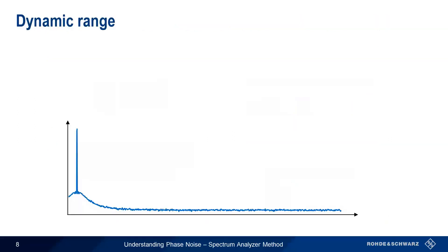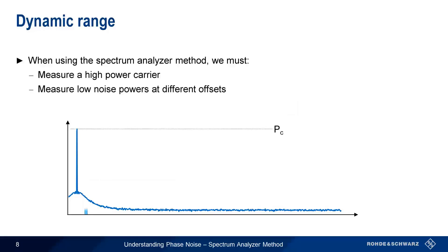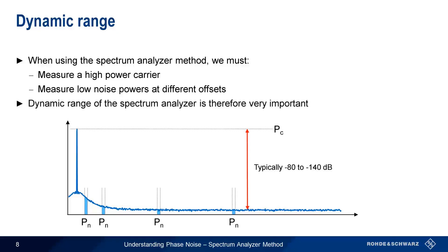In the spectrum analyzer method, we calculate phase noise by measuring both the power of the carrier as well as the noise powers at different offsets from the carrier. The difference between the measured carrier power and the measured noise power is usually quite large, typically 80 to over 140 dB. And to make accurate phase noise measurements, we need to be able to measure both very high and very low powers simultaneously. Therefore, dynamic range, that is, the difference between the largest and smallest signals that can be accurately measured, becomes very important when choosing a spectrum analyzer for making phase noise measurements.